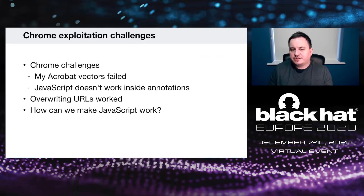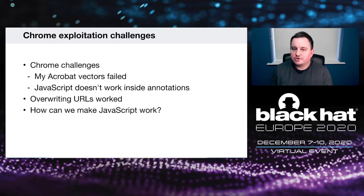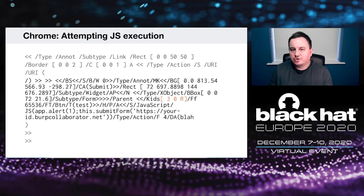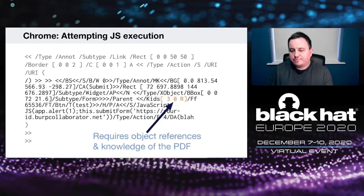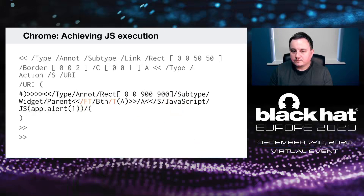There were a couple of challenges: Acrobat vectors didn't work, JavaScript didn't work in annotations, and we could only overwrite the URL. I wanted to make JavaScript work in Chrome. My first attempt to create JavaScript execution from a PDF injection on Chrome required a lot of code and some parts needed references to different objects in the PDF — which we can't have because we have no knowledge of the PDF. I managed to reduce a lot of that code.